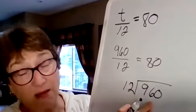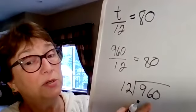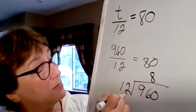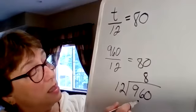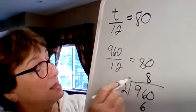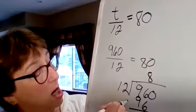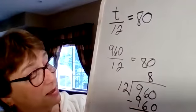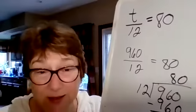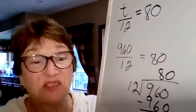Will 12 go into 9? Nope. Will it go into 96? Yeah. About how many times? 8. 8 times 2 is 16, carry the 1. 8 times 1 is 8, and 1 is 9. Score! Draw your line and subtract. 0, 0, 80. Yes, we are right. Doesn't that feel good? I love the check part. That's the best.